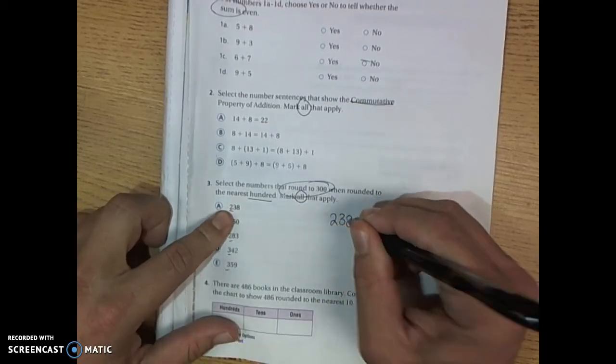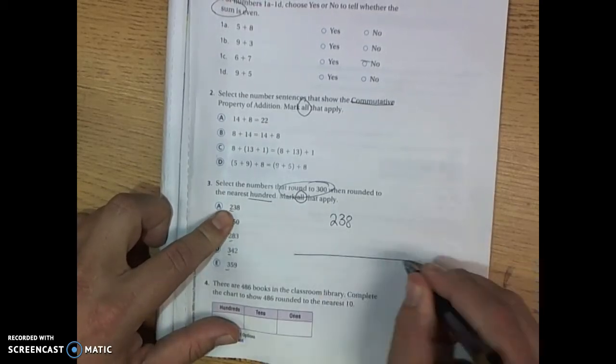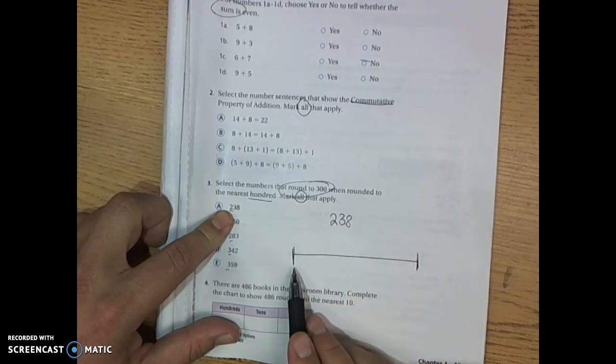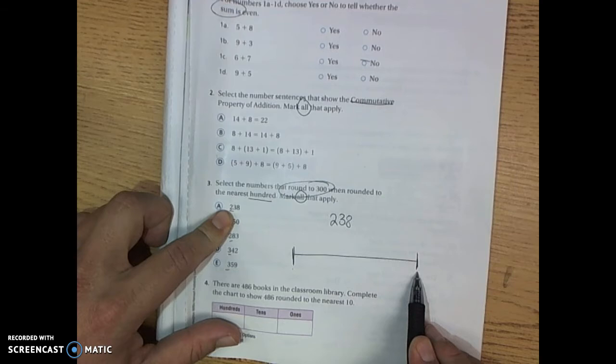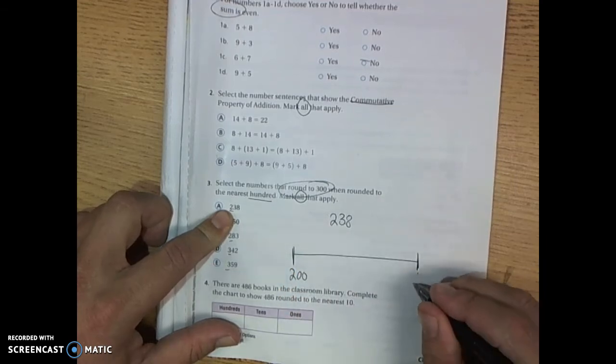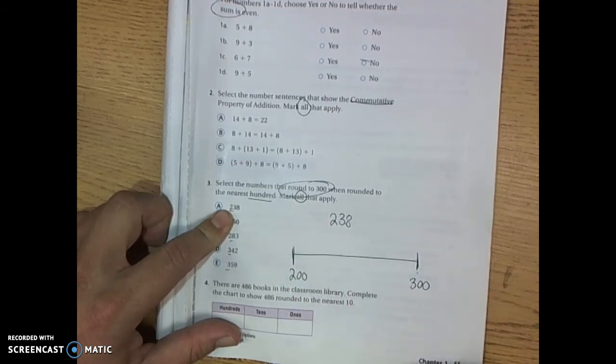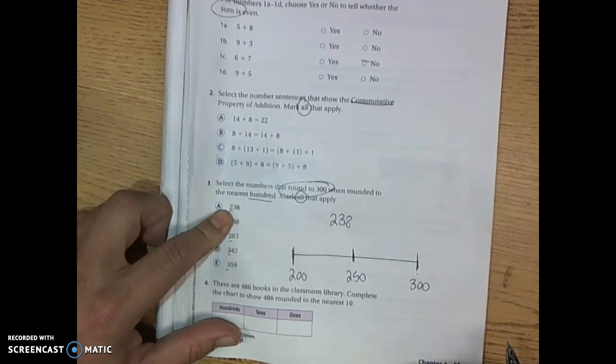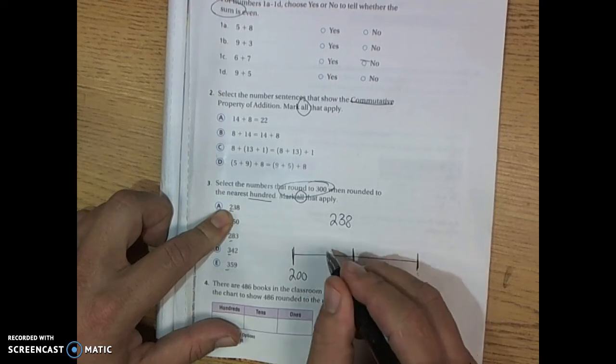238. For these rounding problems we chose the number line method. If we're looking at 238 we ask ourselves what number is on the bottom and what number is going to be on the top. The number at the low point is going to be 200. The number at the high point is going to be 300. Then we ask ourselves what number is in the middle.